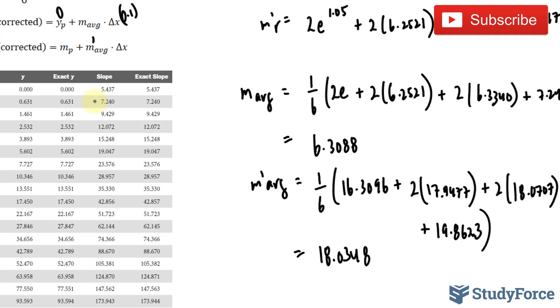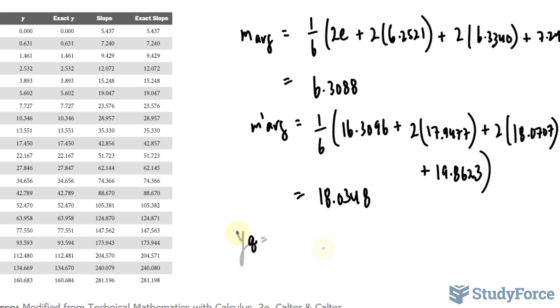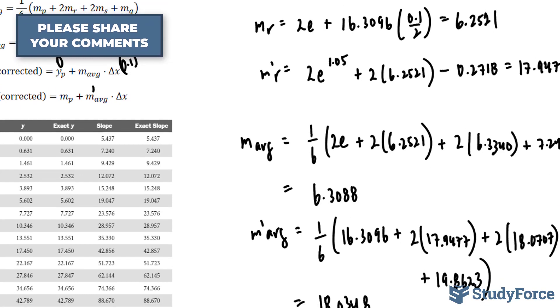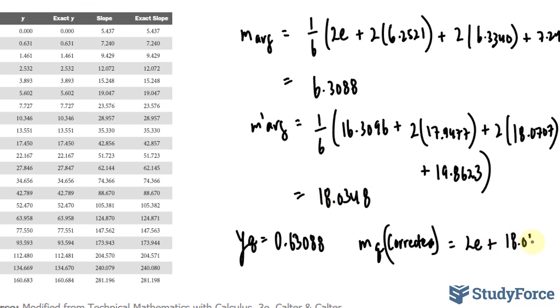So, taking 0 plus my m_average times 0.1, let's use my calculator, 6.3088 times 0.1, that gives us our corrected y of 0.63088. So, y_Q = 0.63088. And our corrected m is equal to what we found for m_P, which was given to us, e times 2, plus the average of 18.0348 multiplied to 0.1. Calculating this, you should end up with this number.